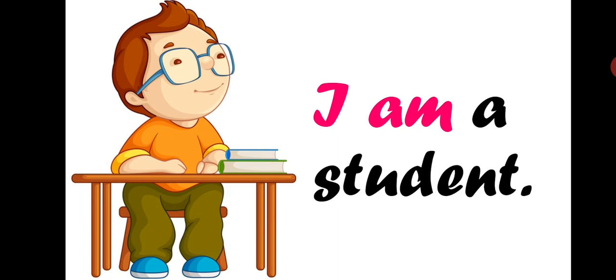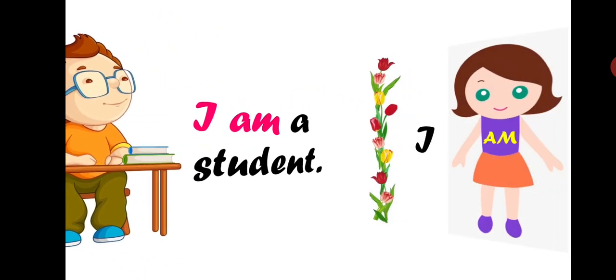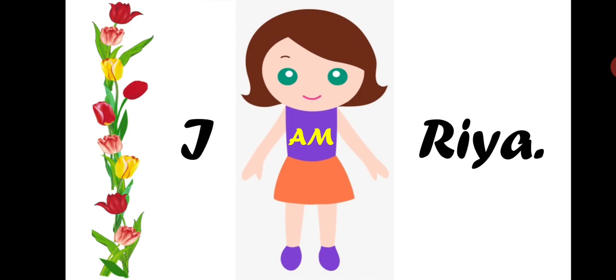Next, I am a student. Here also, am is accompanying I. I am Rhea. Here also, am is accompanying I. So children, have you observed in the above examples, am is only accompanying I? That means am will always be used with I only.